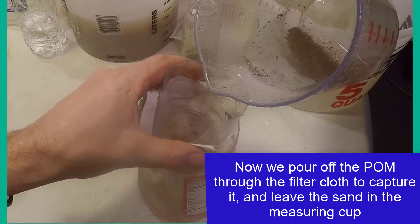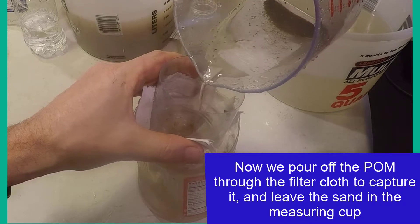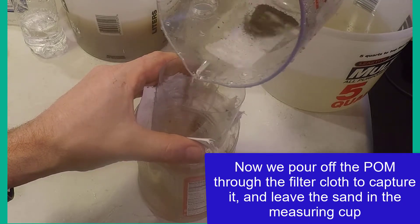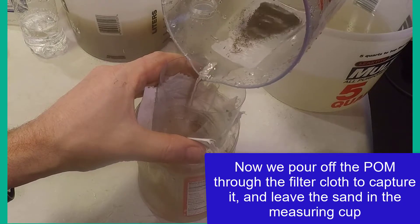The next step is to pour off or decant the organic matter that is floating in the water into the simple cloth filter. Start with the material that is obviously floating.